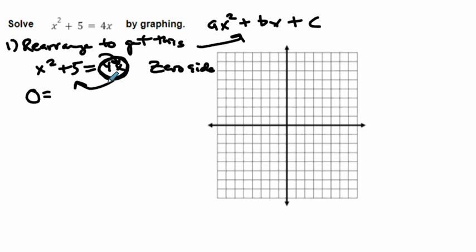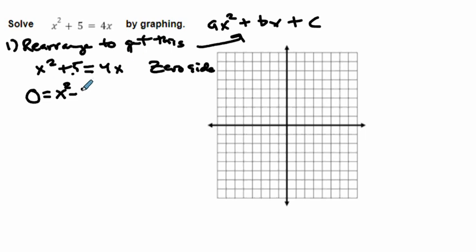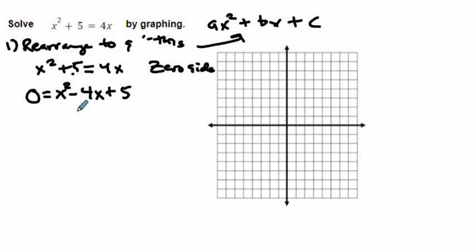When I move my 4x across the equal sign, it changes signs — change side, change signs. So we've got x squared, then we subtract 4x. The x squared and the 5 didn't change; just the 4x came over and became minus 4x. So now it's x squared minus 4x plus 5.